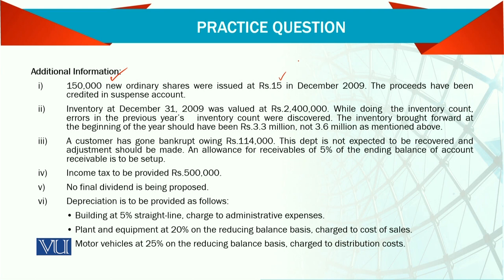Inventory of last year was valued at 2,400, but errors in the previous year's inventory count were discovered. There was a mistake last year that we discovered now, so we need to adjust this error. We cannot do it in the current year income statement. Instead, we adjust it in the statement of change in equity under retained earnings. Remember, if there is a mistake from last year, it should be taken to last year's profit and loss — last year's figures, not current year figures.